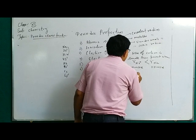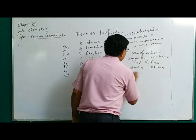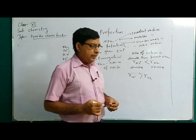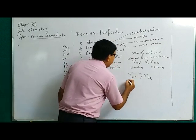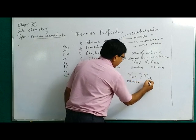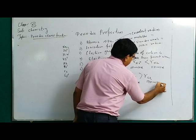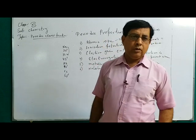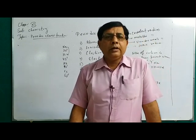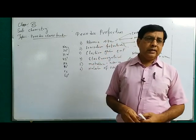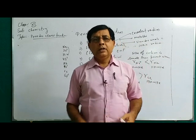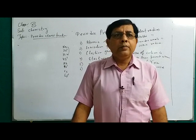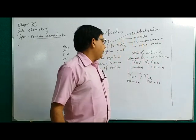Similarly, anions have larger size than the parent atom — for example, R of Cl⁻ is greater than R of Cl. In a chlorine anion, 17 protons attract 18 electrons. Same number of protons attack more electrons, so the attractive force on each electron decreases. Additionally, due to the addition of one extra electron, there is more electron-electron repulsion. So due to less attractive force of the nucleus and greater electron-electron repulsion, the size of an anion is always larger than the parent atom.